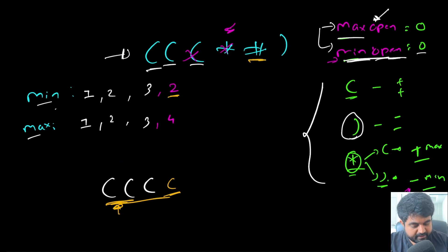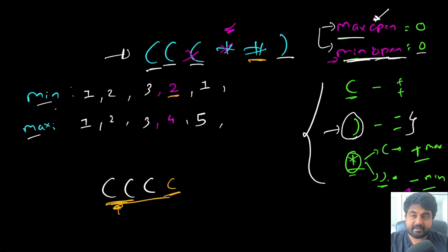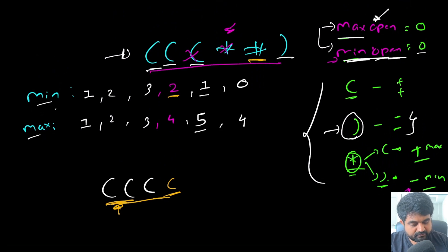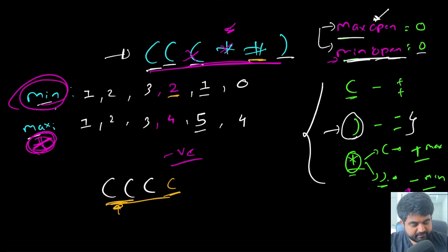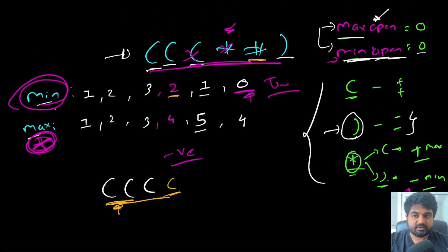We encounter another star: `min` decrements to 1 and `max` increments to 5. Then we see a closing parenthesis, so both decrement: `min` becomes 0 and `max` becomes 4. At the end of the loop, `max` only matters for the negativity check. Since `min_open` is 0, we return true — this is a valid string.